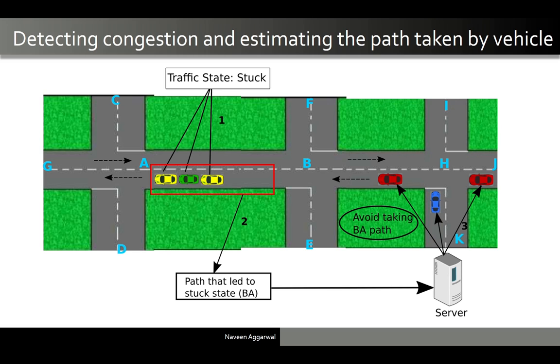Traffic congestion on urban roadways is a serious problem requiring novel ways to detect and mitigate it. Determining the routes that led to the traffic congestion segment is also vital in devising mitigation strategies.